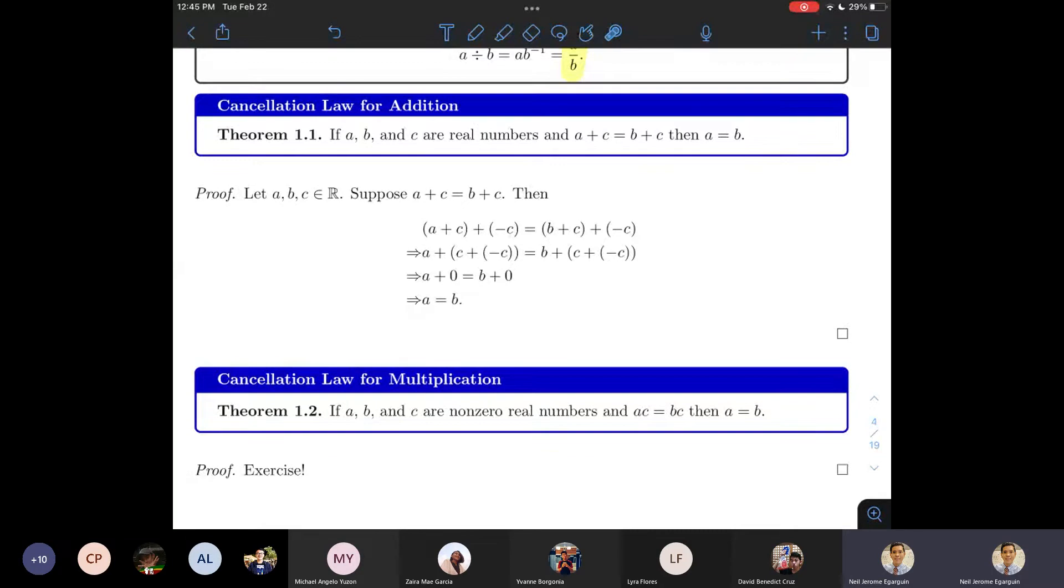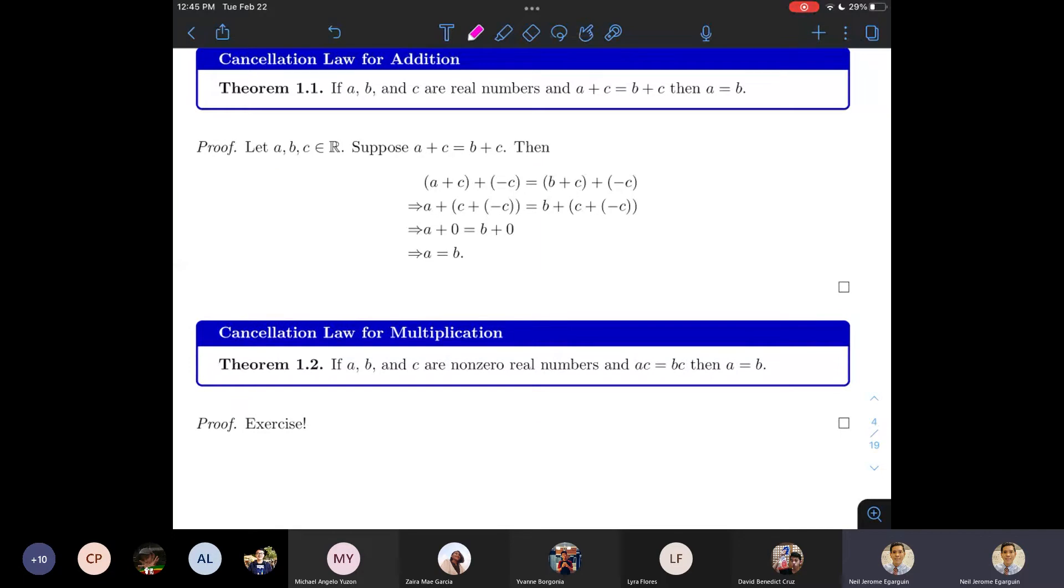Another notation for a to the minus one is one over a. This guy is not the fraction one over a. It's just a notation for the multiplicative inverse of the number a. I missed one important thing. It's not all real numbers have multiplicative inverse. The existence of a multiplicative inverse is only guaranteed for non-zero real numbers. Because you will see later it is impossible to get a multiplicative inverse for zero. Axiom nine, it's a combination of addition and multiplication. This is the distributive property of multiplication over addition.